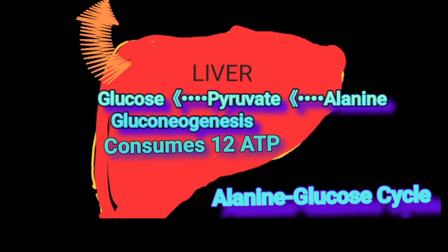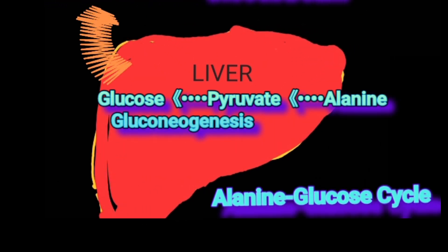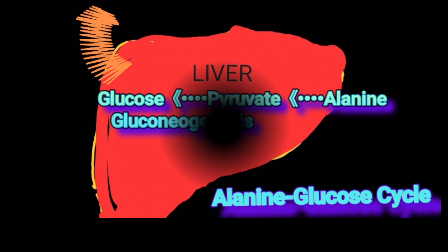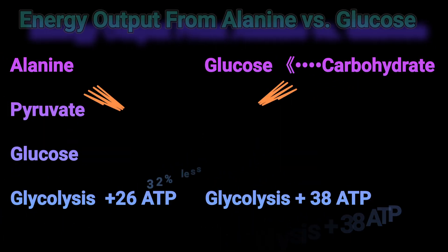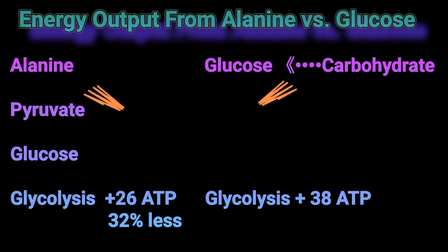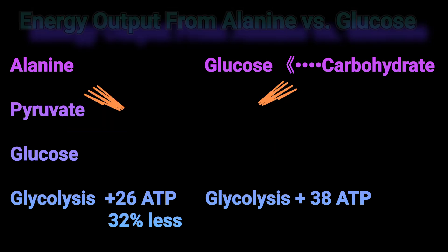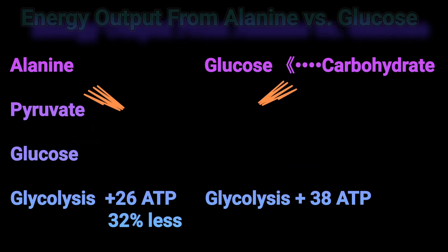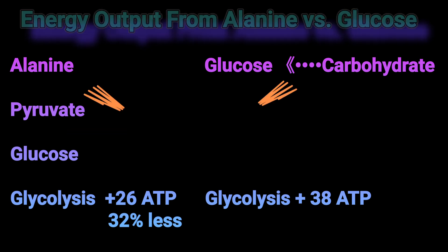The maximum ATP yield from glycolysis is 38 ATPs. Therefore, the net ATP output from one molecule of glucose derived from alanine will be 26 ATPs instead of 38 ATPs. This means the output of glycolysis of glucose derived from alanine is 32% less efficient than glycolysis derived from carbohydrates.